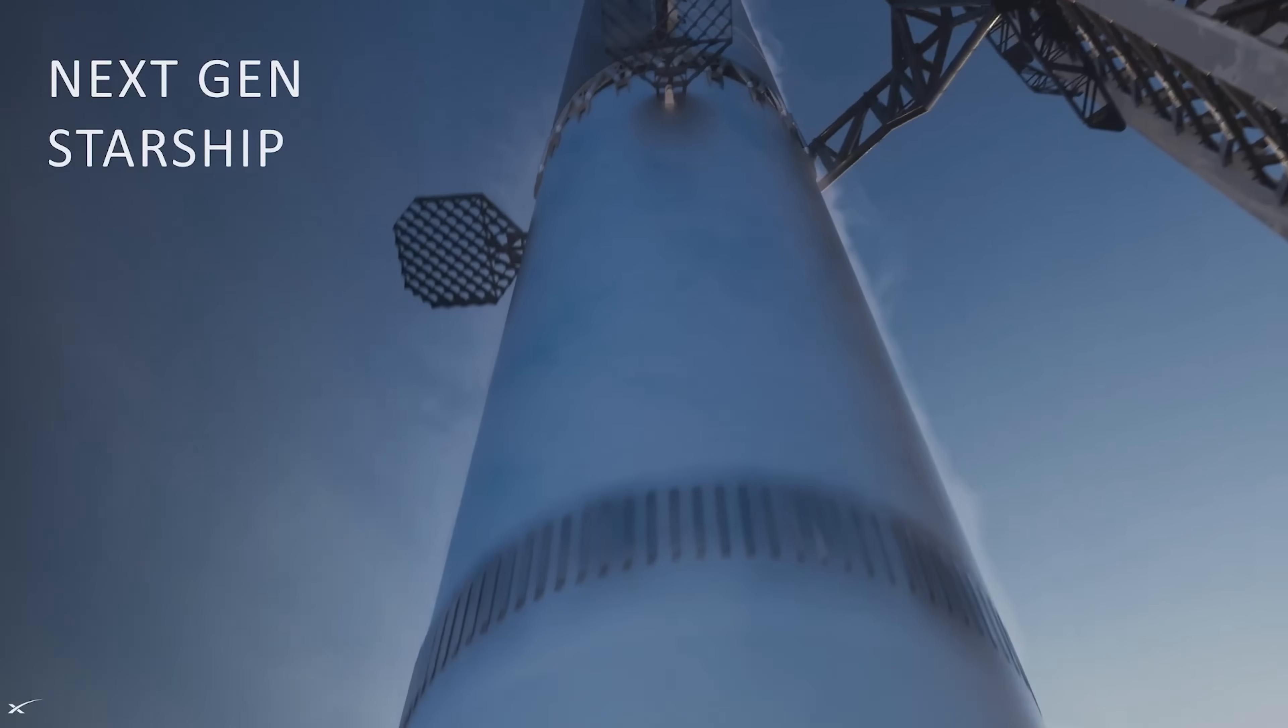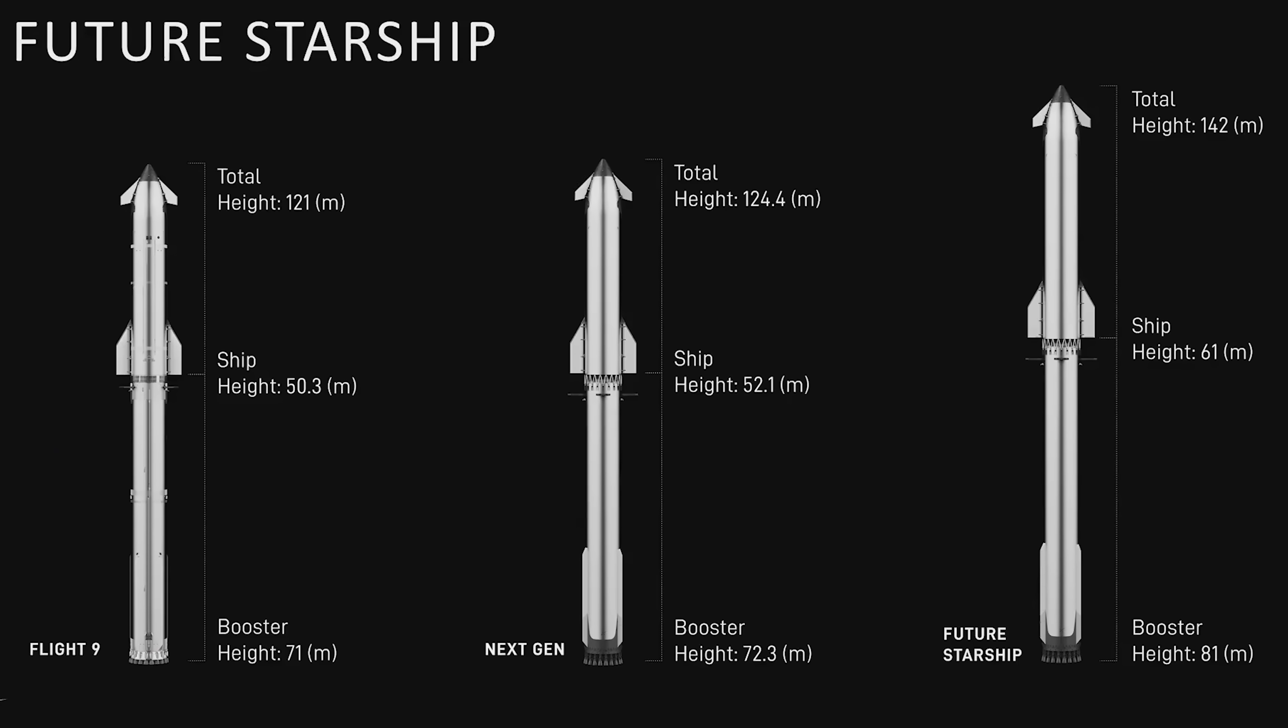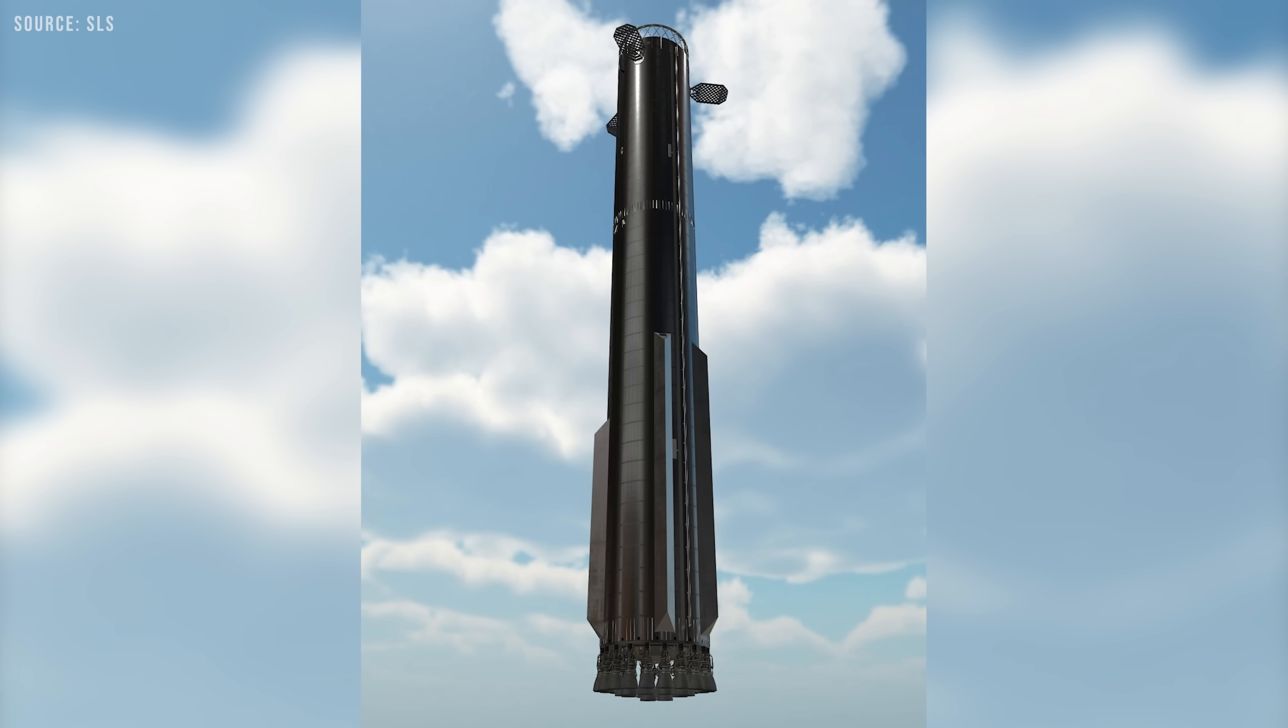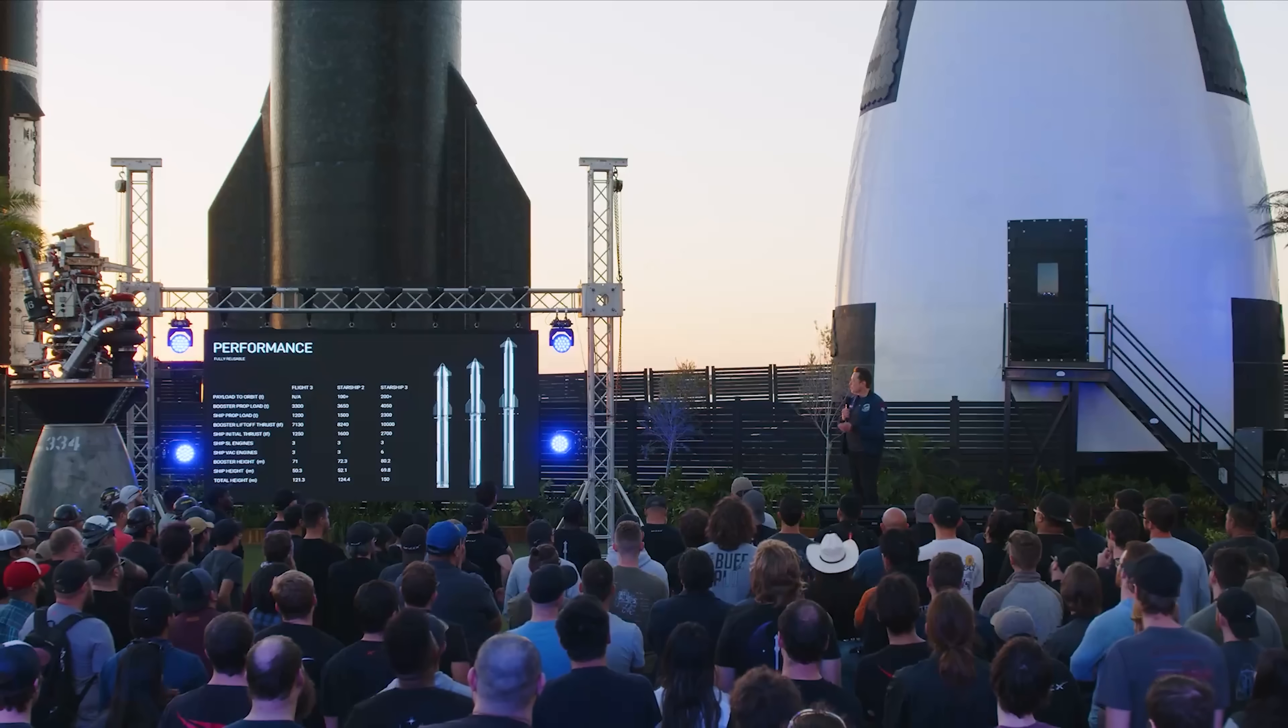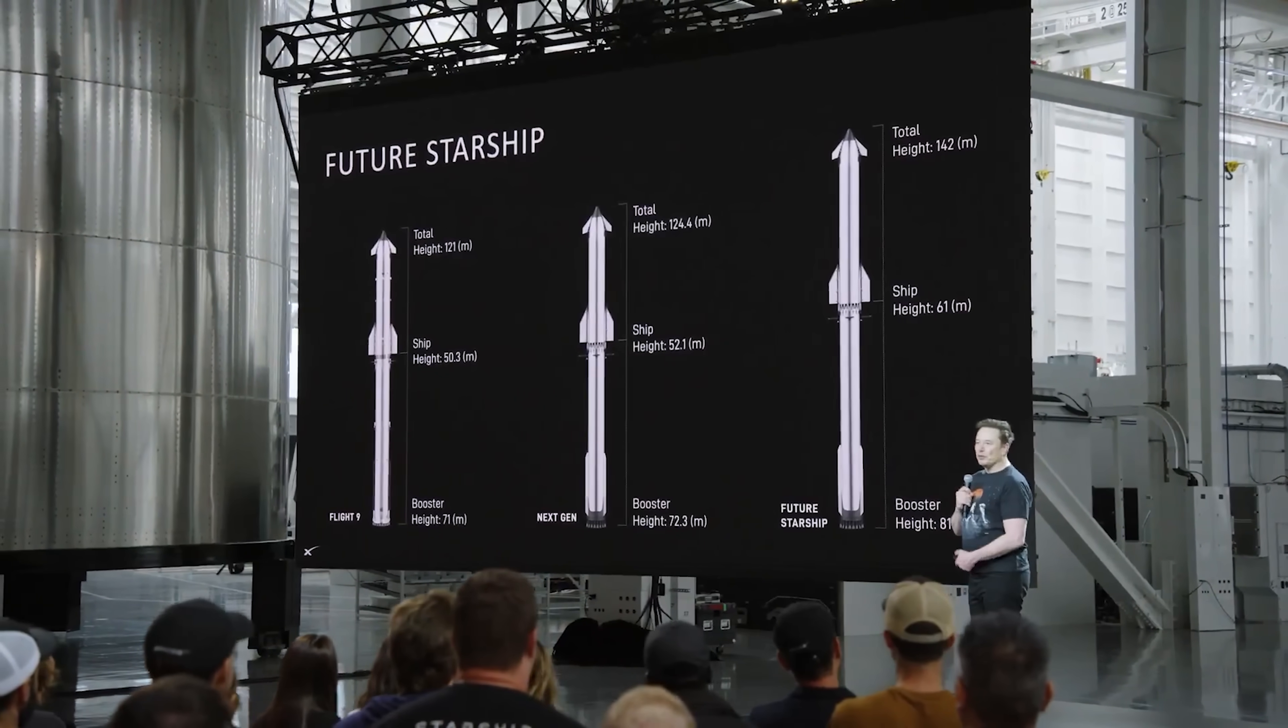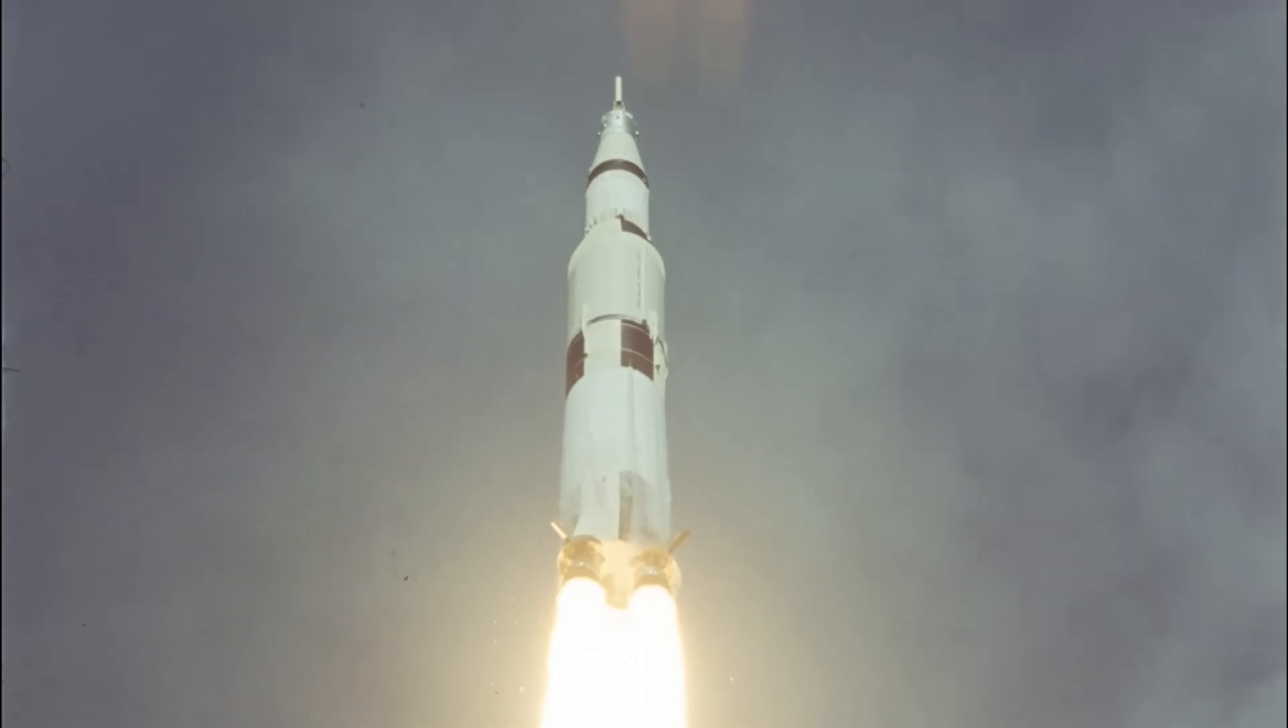The number of changes in the Version 3 Super Heavy booster is remarkable. It's essentially a completely new vehicle with very little resemblance to its predecessor. One of the most noticeable upgrades is its increased height, now measuring 72.3 meters. It carries 3,650 tons of propellant and delivers 8,240 metric tons of thrust at liftoff. These figures match the specifications listed for Starship 2 in the April 2024 Starship update.